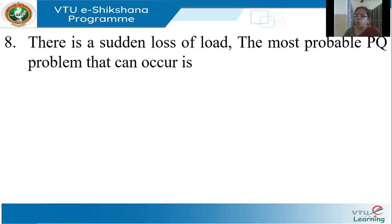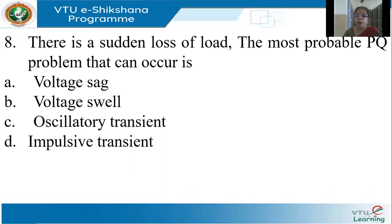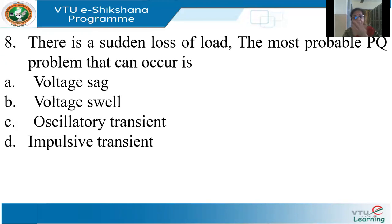There is a sudden loss of load. When there's a loss of load, there can't be a sag because the current will reduce when the load is thrown off. Oscillatory or impulsive transients have nothing to do with load being switched on or off. It is a voltage swell — because the current reduces suddenly, compensation that existed before is now excessive, and there will be a voltage swell.